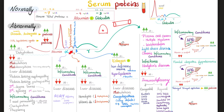Alpha-1 globulin, such as alpha-1 antitrypsin: it increases in inflammatory conditions as an acute phase reactant, and decreases in liver disease. Patients born without the enzyme — alpha-1 antitrypsin deficiency — can develop cirrhosis and emphysema, as discussed in my pulmonology playlist.